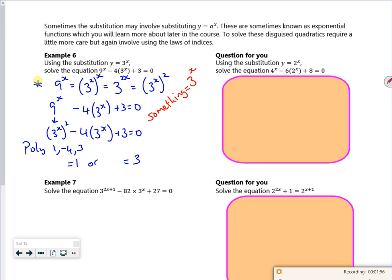So I've got 3^x is equal to 1. Now 1 is the same as 3 to the power of 0. So because of that, x must be 0. 3 is 3 to the power of 1. So if I've got 3^x is 3, that must mean that x is 1.